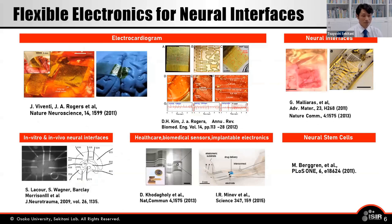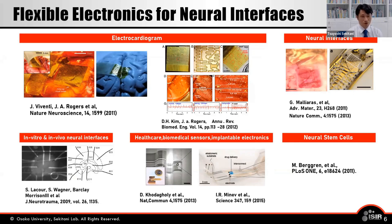One of the major applications using flexible, stretchable electronics is the neural interface. Because the brain is extremely soft, existing hard electrodes and devices can cause damage to brain tissues. This slide shows an example of excellent pioneering research achievement on the brain neural interface using flexible, stretchable technologies. Research and development of electrodes and circuits for brain measurement using flexible and stretchable electronics has led to excellent measurement of brain activity, especially electrocardiogram.